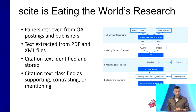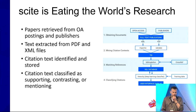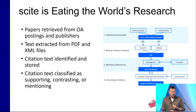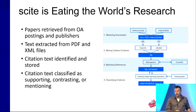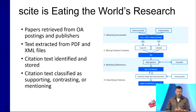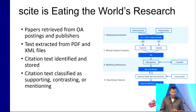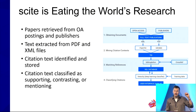We retrieve papers from open access postings. We have a partnership with the folks behind Unpaywall, and we also have indexing agreements with many major publishers. They send us both their back catalogs as well as an ongoing deposit of new publications. We then extract the text from either the PDF or XML files, and we have methods of identifying the text of citations.